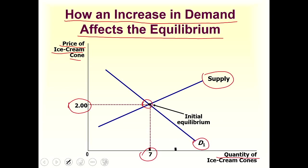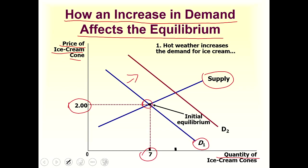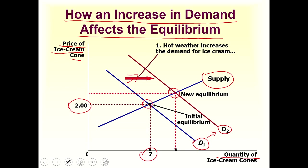An increase in demand means the demand curve will shift to the right. Hot weather increases the demand for ice cream, so the demand curve will shift from D1 to D2. We now have a new demand curve while the supply curve has not changed, and the equilibrium has changed from the initial equilibrium to the new equilibrium.